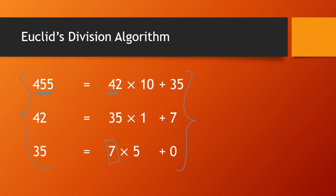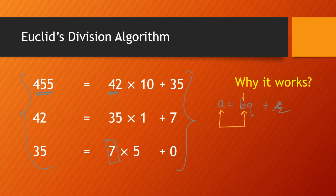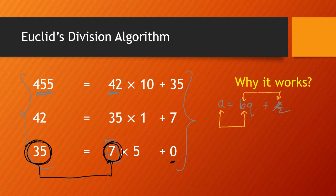How does it work or why does it work? It works because for A = BQ + R, the HCF of A and B is always the same as the HCF of B and R. This is the reason why this method works. Now let us verify this starting backwards. HCF of 7 and 35 is 7 — because the remainder is 0 and 35 is a multiple of 7.